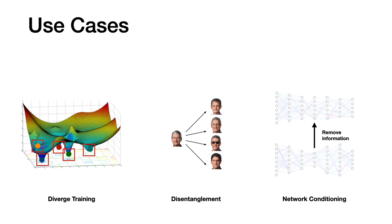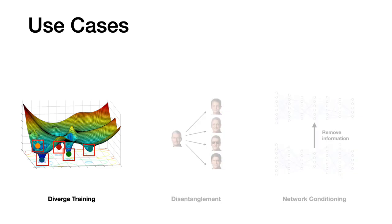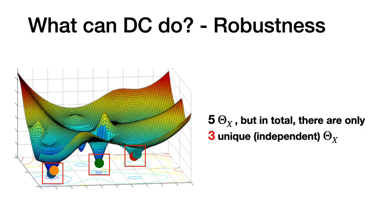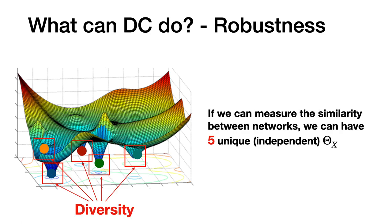Let's move to the actual use cases of distance correlation. In this paper, we cover three very different applications to show the power of distance correlation. Let's first look at the diverge training setup. If we want to improve the robustness of a given network, one idea is to train several networks and then assemble them together. If we do not control the subnetworks, even though we train five networks, we may only have three unique solutions. But if we use distance correlation to impose that those five networks to be independent, we can have a more diverse distribution of networks.